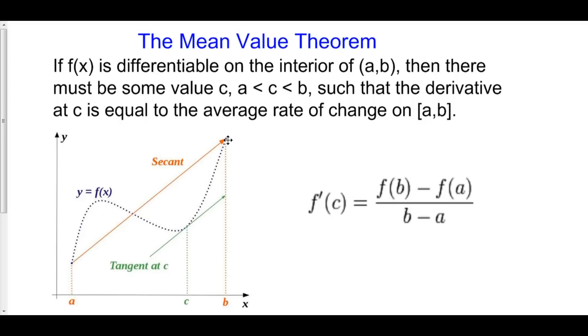What the Mean Value Theorem states is that if your function is differentiable in between a and b, then there must be some value, we'll call it c, such that the derivative at c, or the tangent line, is equal to the average rate of change from a to b. One way to think about this is if the slope of the secant line equals the slope of the tangent line, then these two lines must be parallel.